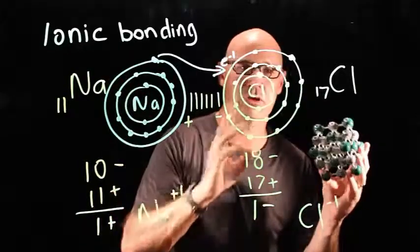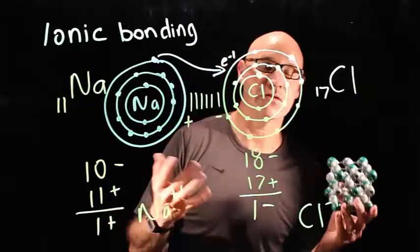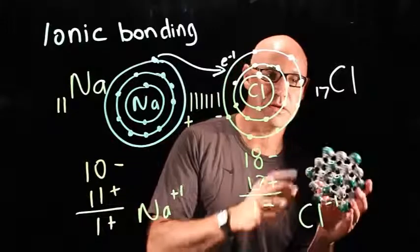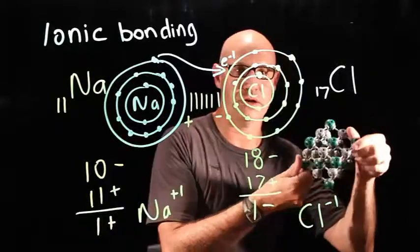So, sodium and chlorine, when they're together, that's sodium chloride, that's salt. So, it's the salt that you put on your chips. That is sodium chloride. Well, there you go.